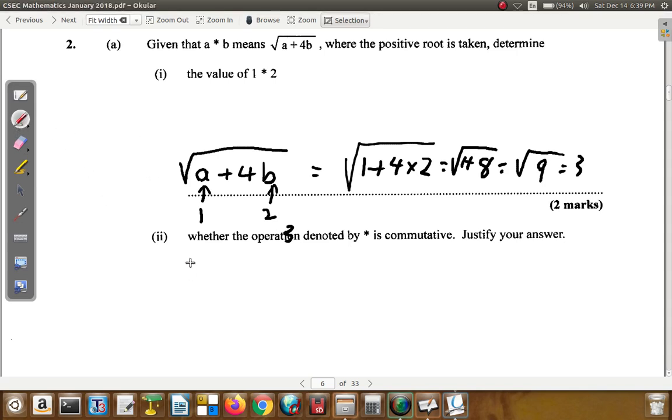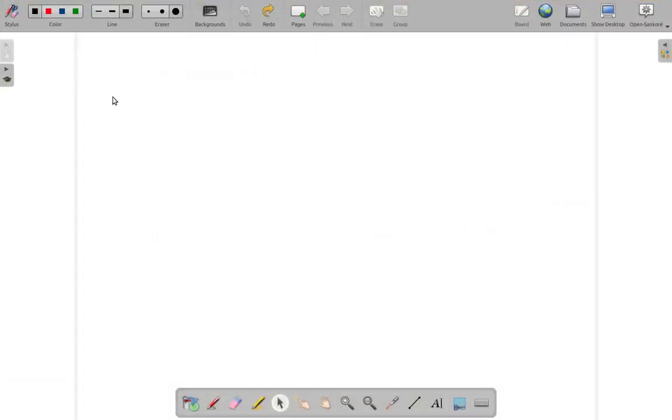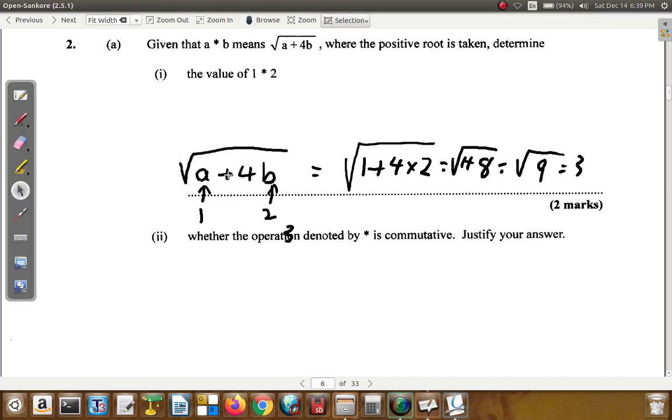Let me just get this thing right. Technical issue here. Alright, good. So, we are here. Now, what we have is A star B is the square root of A plus 4B. At the same time, we could try and say, B star A would be what? Well, you put B first.